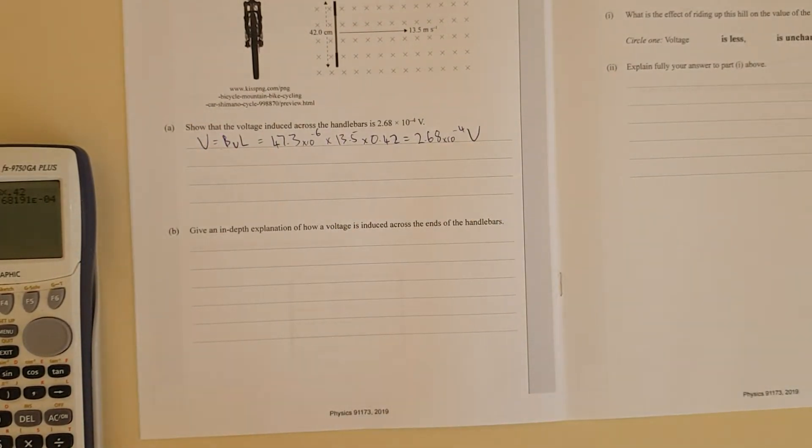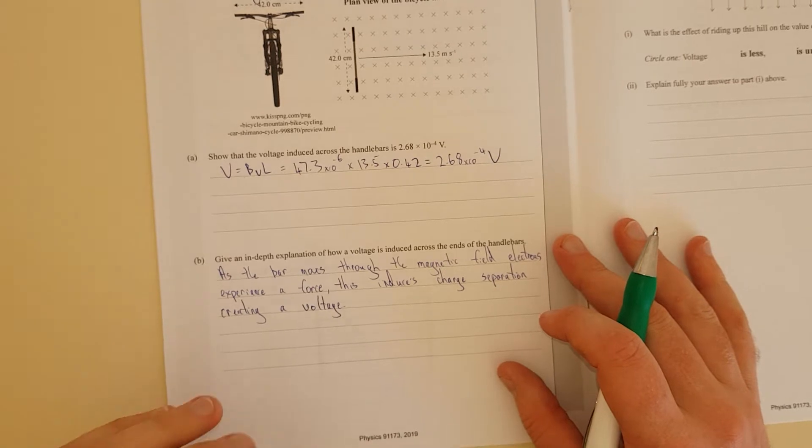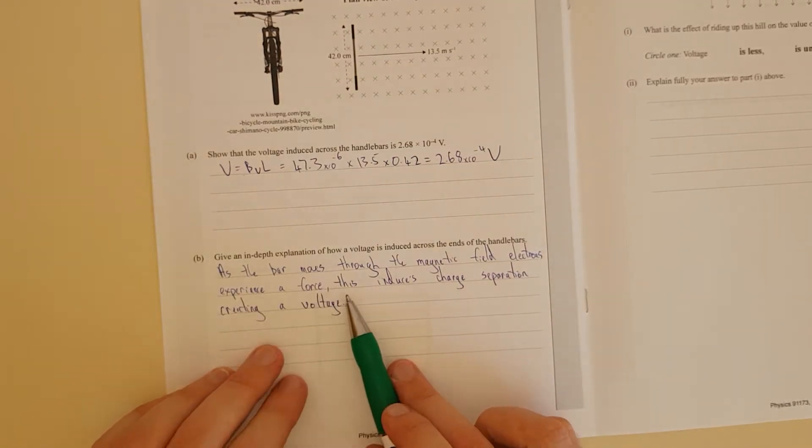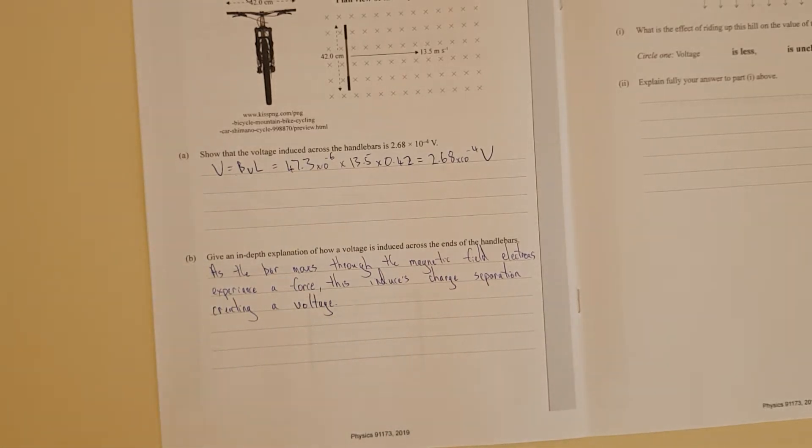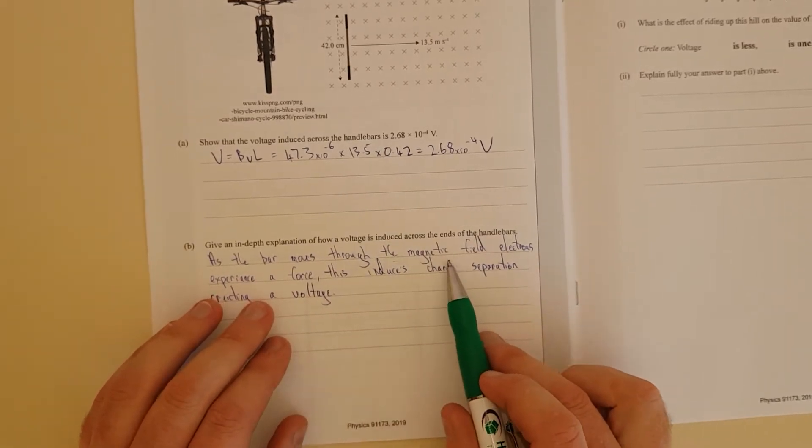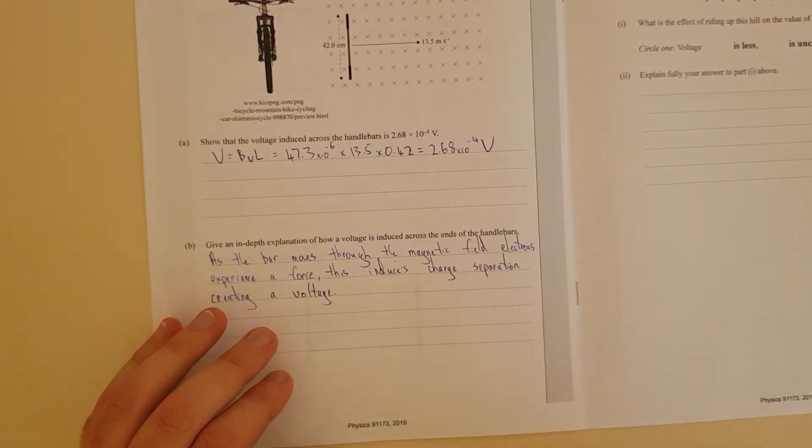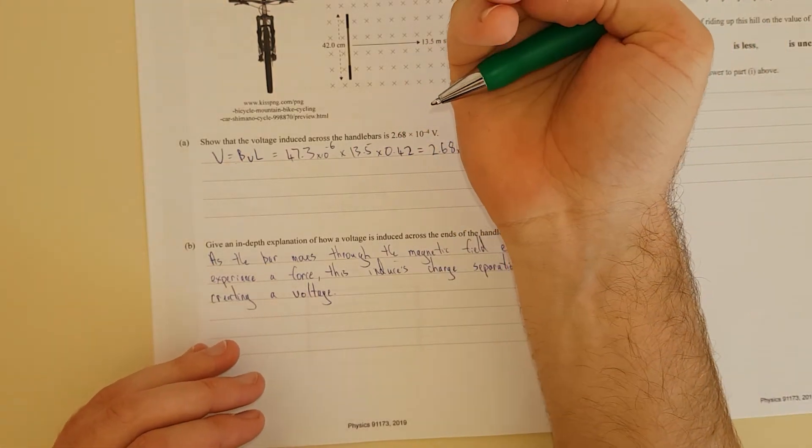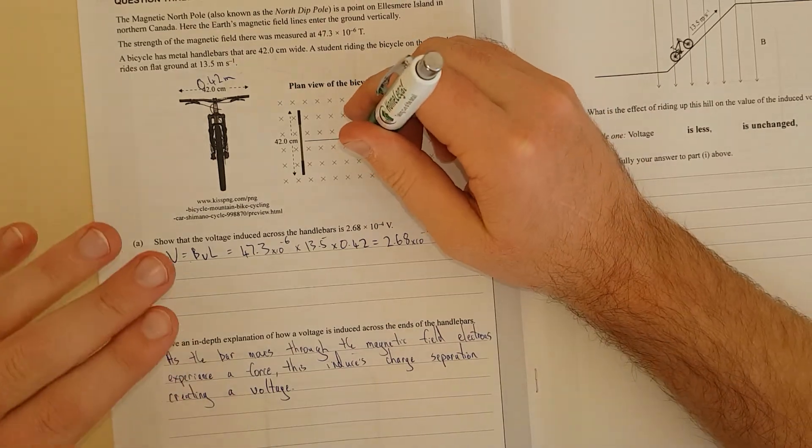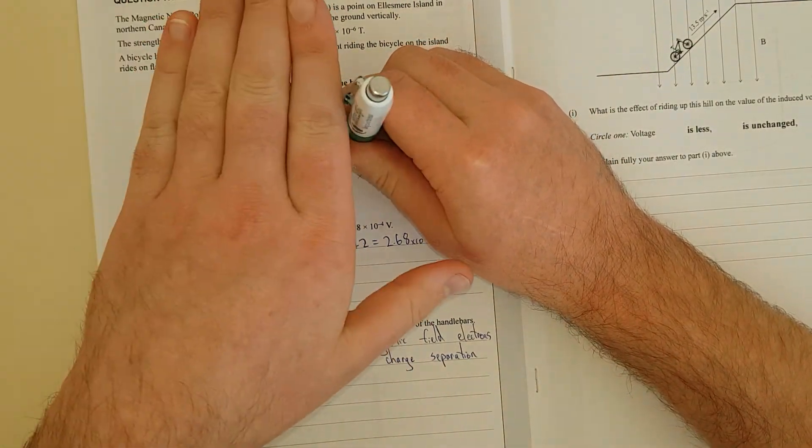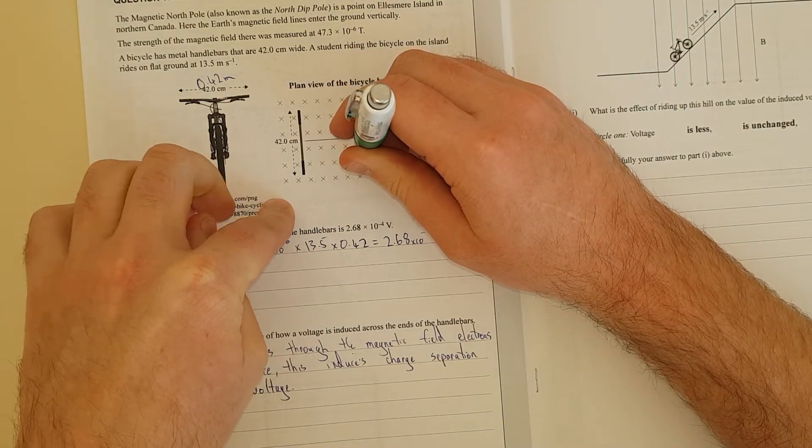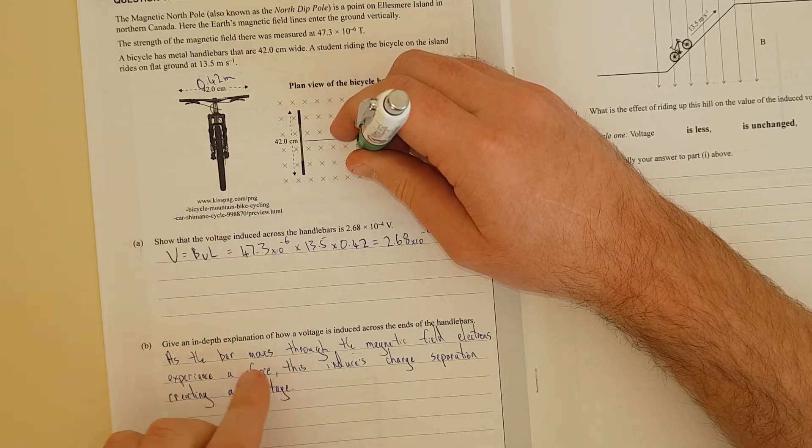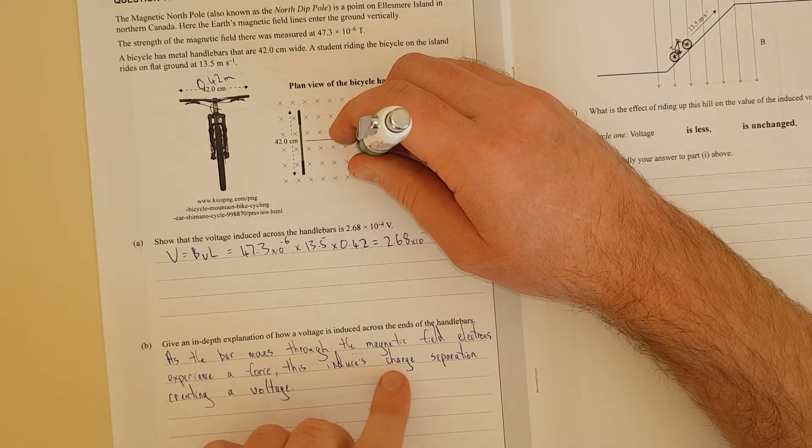Given a depth explanation of how a voltage is induced across the handlebars. As the bar moves through the magnetic field, electrons experience a force. This induces charge separation, creating a voltage. My choice of words here is very particular. You need to say that it's moving. I should have really used moving 90 degrees to the magnetic field. It needs to cut across the magnetic field. So we've got the magnetic field going into the page. The field lines are going in. The electrons need to go perpendicular to that.